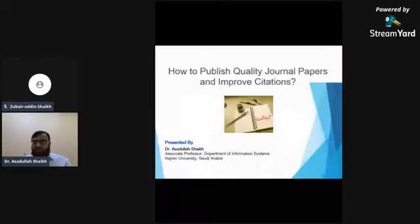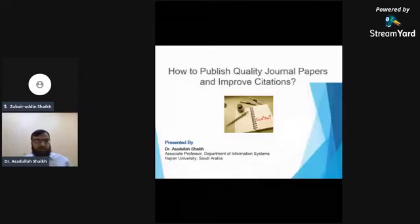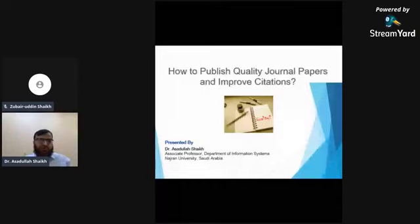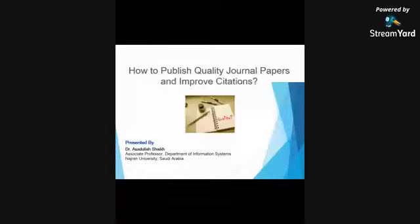Let's make this presentation a little bit more interactive so it won't be too boring. If there's any question during the presentation, you can type or ask and I can answer simultaneously. Today's topic is how to publish quality journal papers and improve citations, which is one of the basic needs for applying for promotions, research funds, and advancing in every research era.